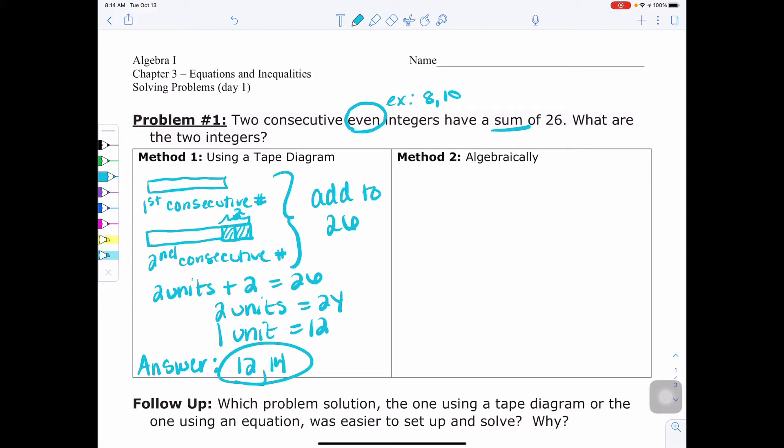So now let's look at what that looks like algebraically. I like to look at the bars as our let statement. So whenever we're setting up an equation algebraically, we need to make sure we have a let statement stating what variable we're using and what it stands for. Minimally, you should have let x equal the first consecutive even number.